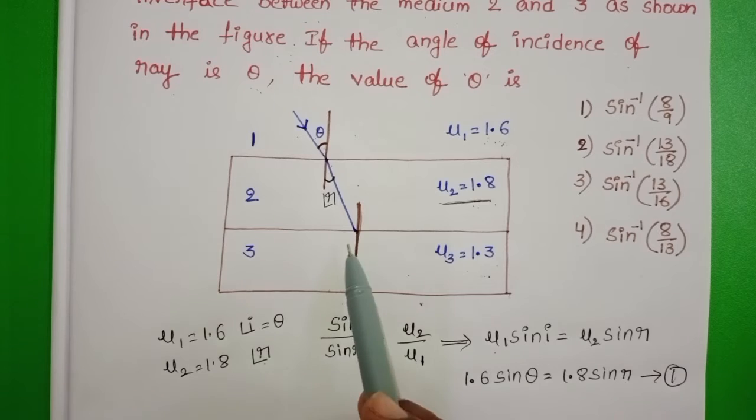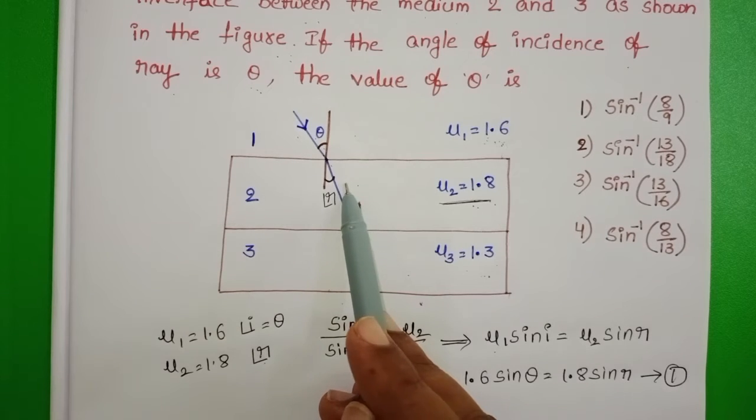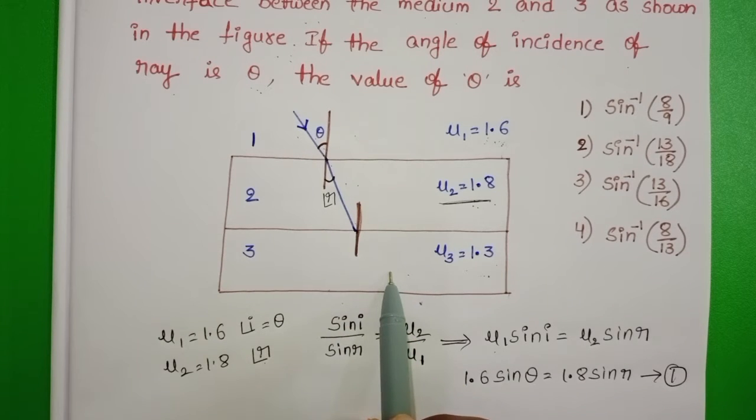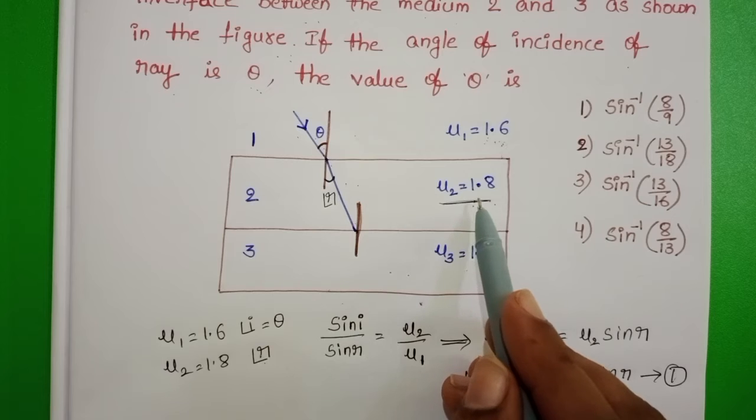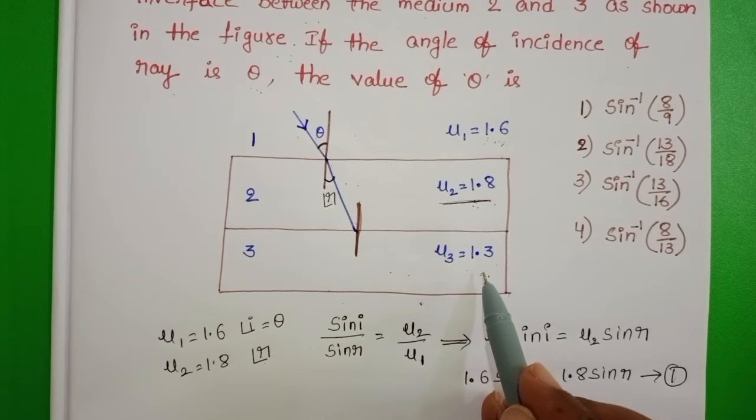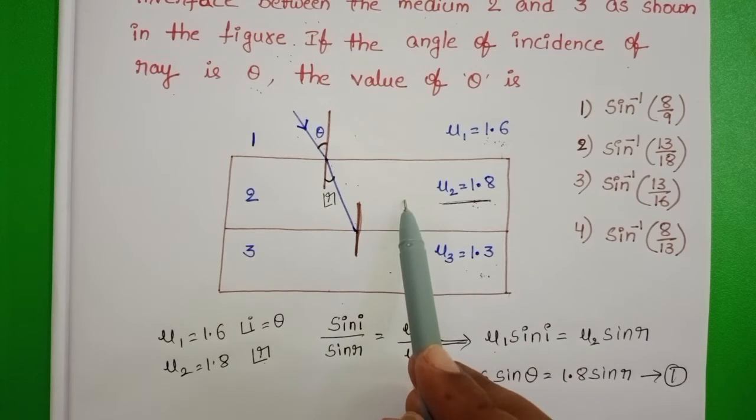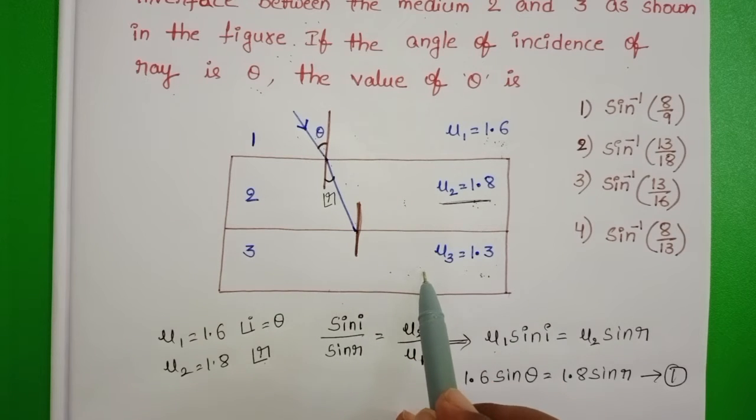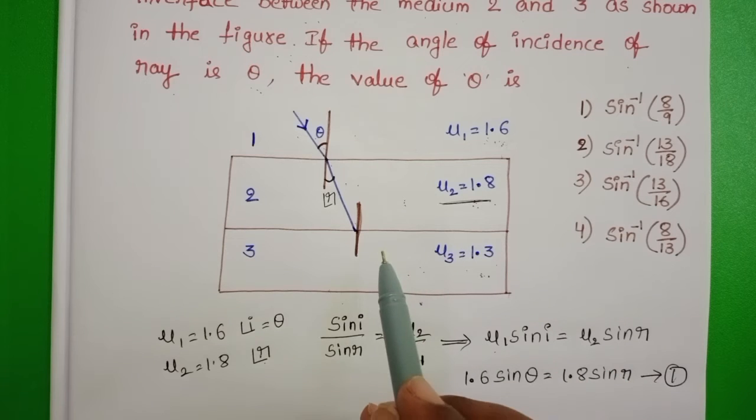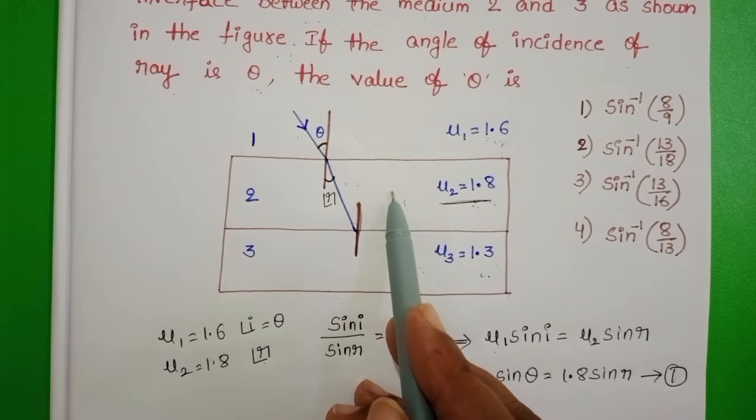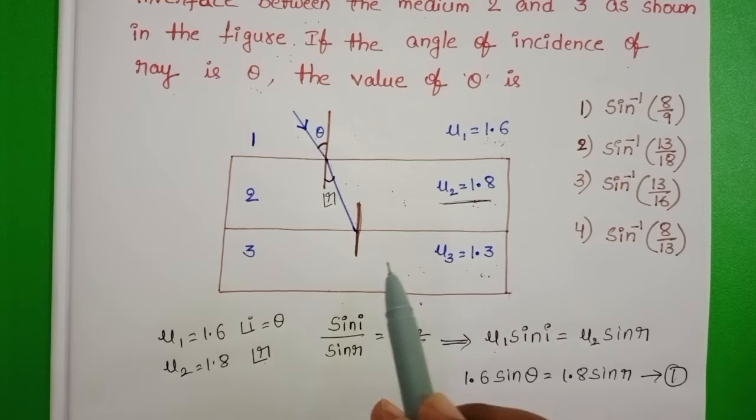And now this light ray enters from second medium to the third medium. Refractive index of the second medium is greater than the refractive index of the third medium. So this medium behaves like denser medium and this is rarer medium. When a light ray enters from denser medium to the rarer medium.